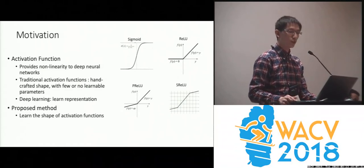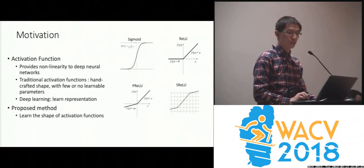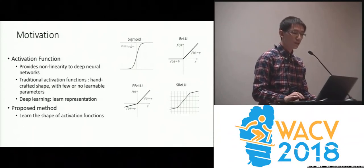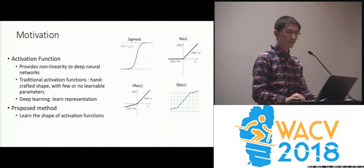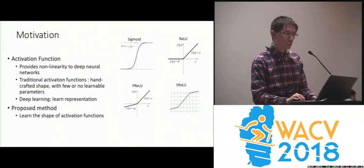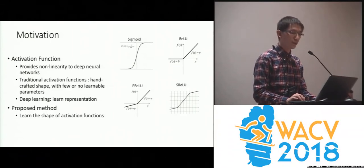Activation functions play an important role in deep neural networks. They provide the non-linearity which is essential to learn complex distributions. Here we show a few commonly used activation functions. Their shapes are mostly handcrafted — they are either fixed or only have a few learnable parameters.